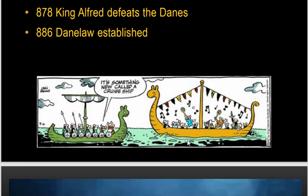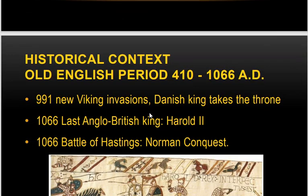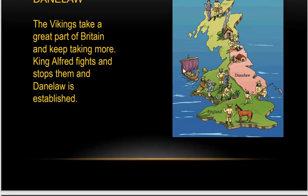A legislative framework was established in 886 to protect the territory of Great Britain, undertaken by the British ancestors. The Vikings took a great part of Britain and kept taking more. King Alfred fought and stopped them, and Danes law was established.